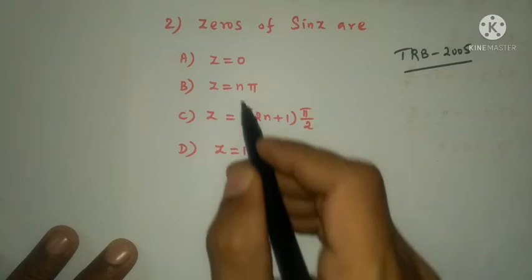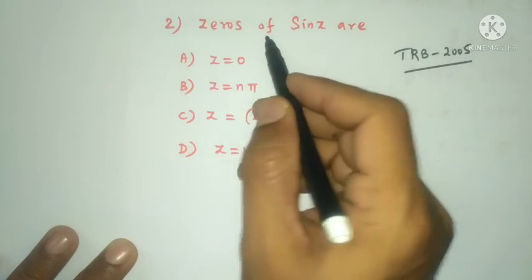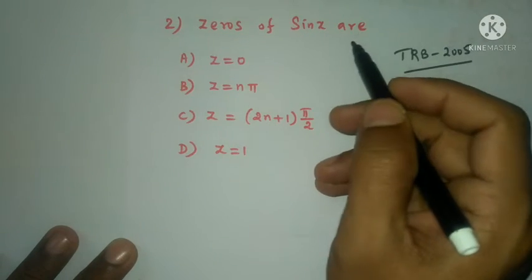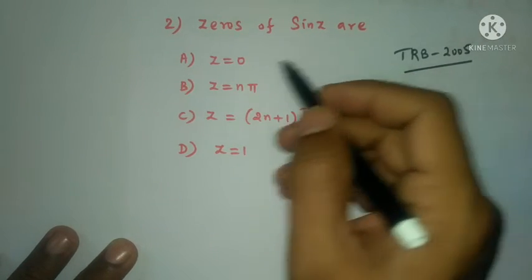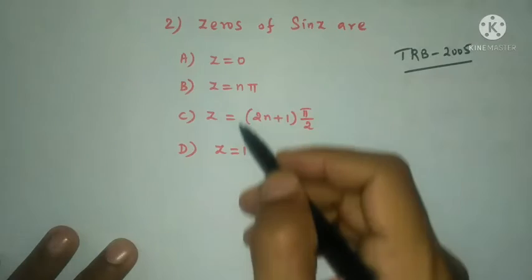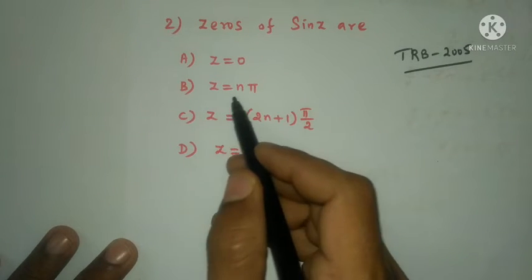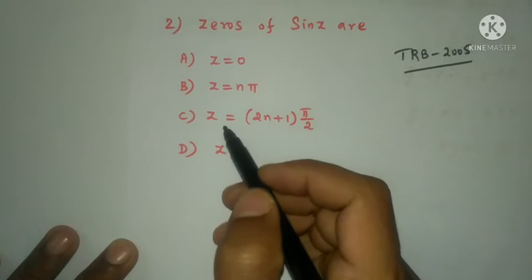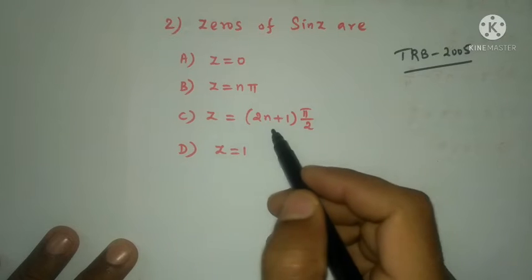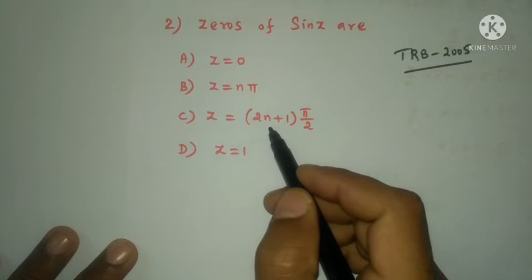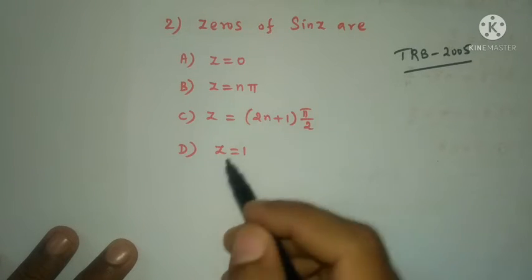Next question: find the zeros of sin z. Setting sin z = 0, the zeros are z = nπ. Also z = (2n+1)π/2 corresponds to zeros of cos z, not sin z.